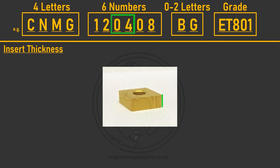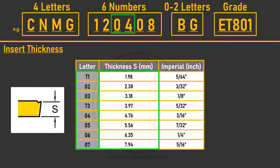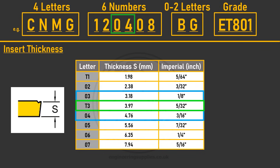The second two numbers indicate the thickness of the insert. The numbers don't correspond directly to a metric size for historical reasons — insert thickness was originally sized in imperial. To avoid confusion, one-eighth inch became size 03 and three-sixteenths became size 04. Where a size fell between established sizes, the letter T replaced the zero — for example, 5/32 at 3.96mm became T3, as it was less than 4mm and more than 3mm.